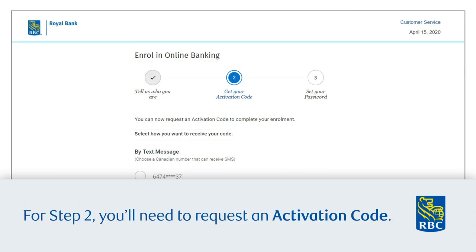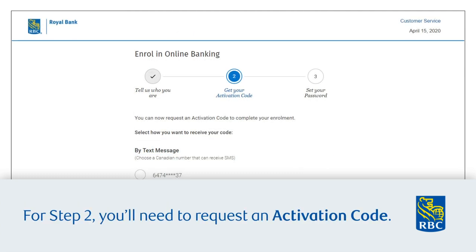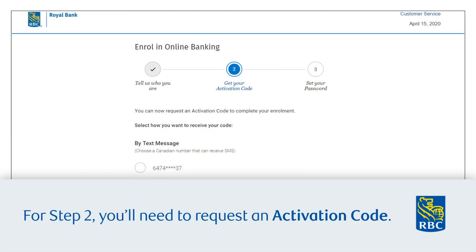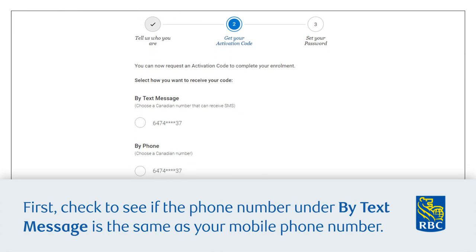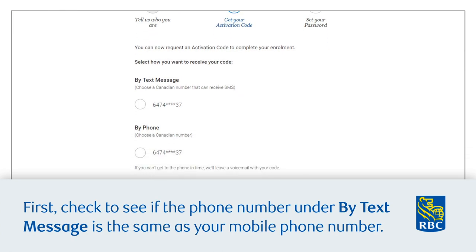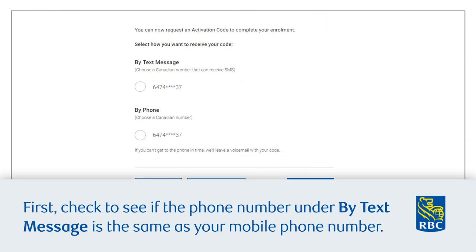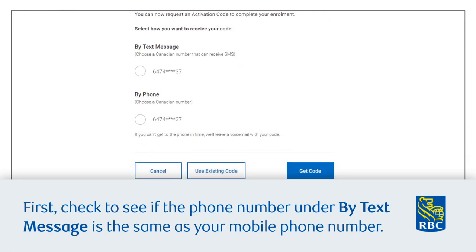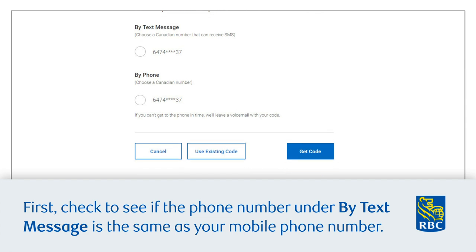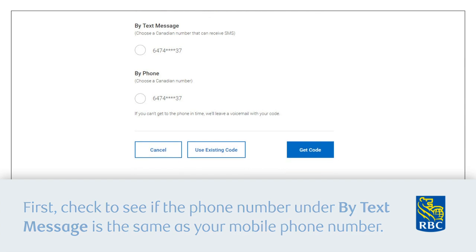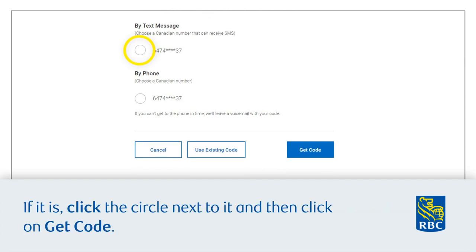For Step 2, you'll need to request an activation code. First, check to see if the phone number under 'By Text Message' is the same as your mobile phone number. If it is, click the circle next to it and then click 'Get Code'.